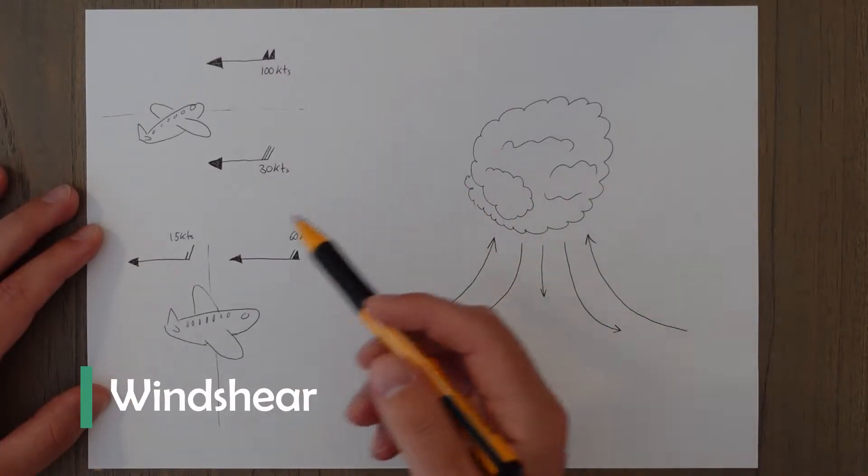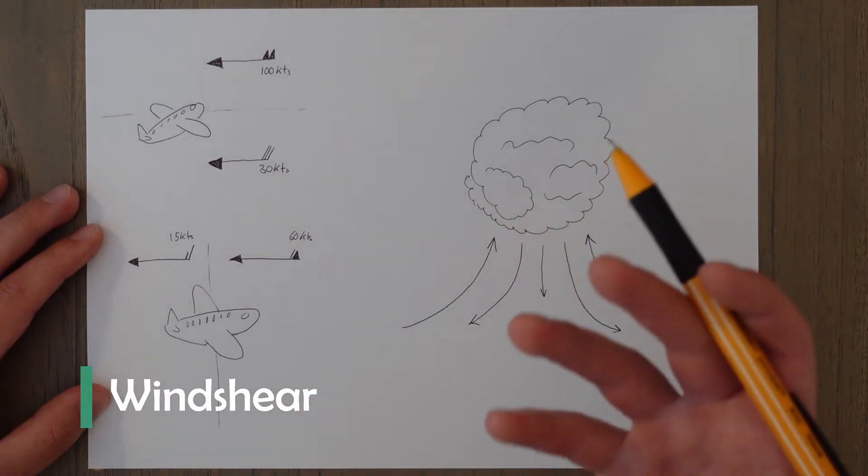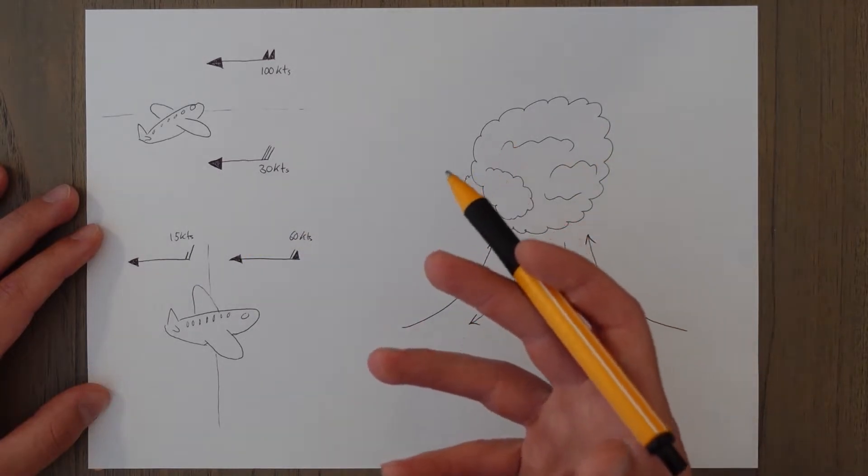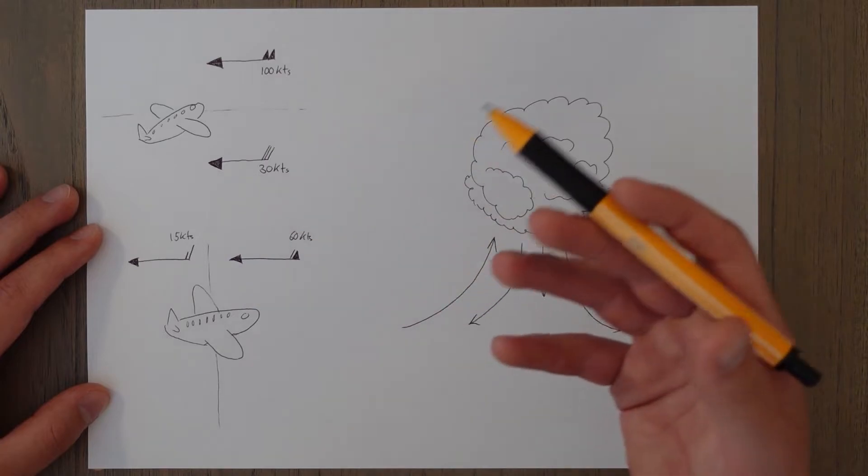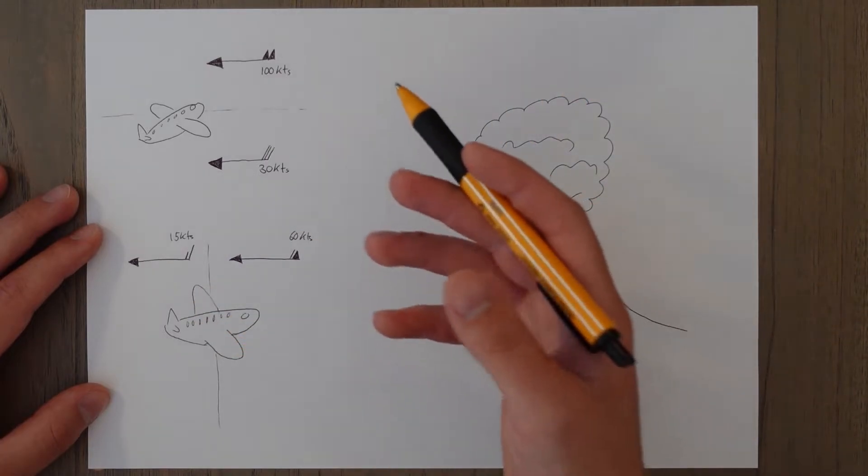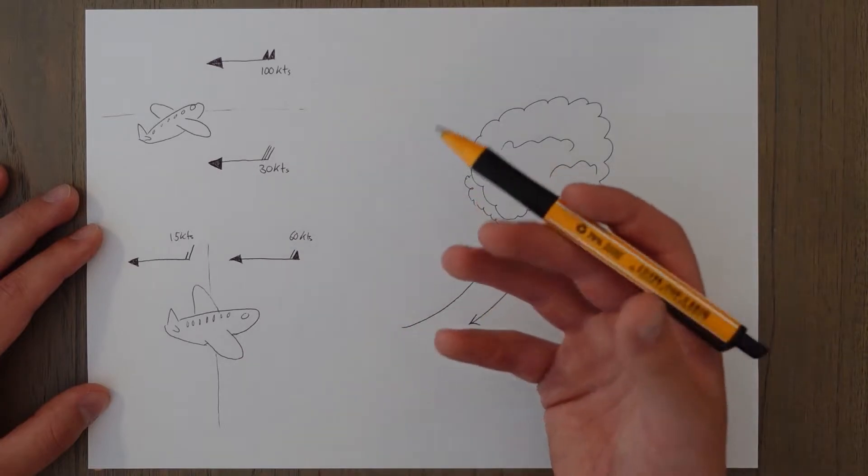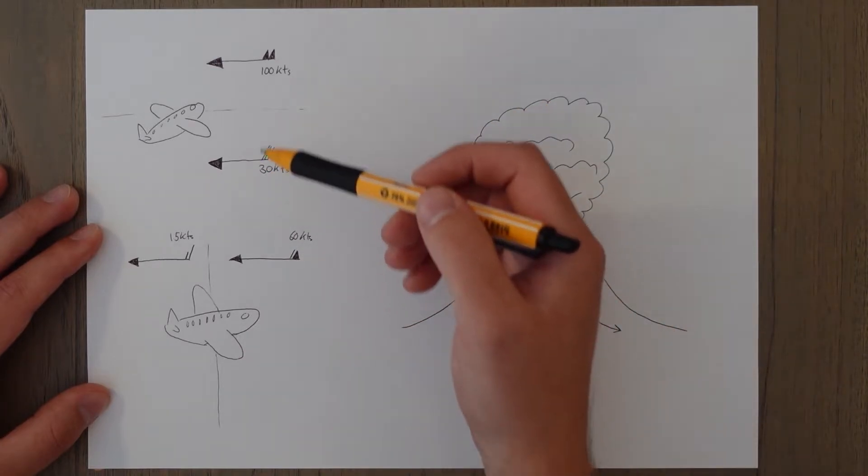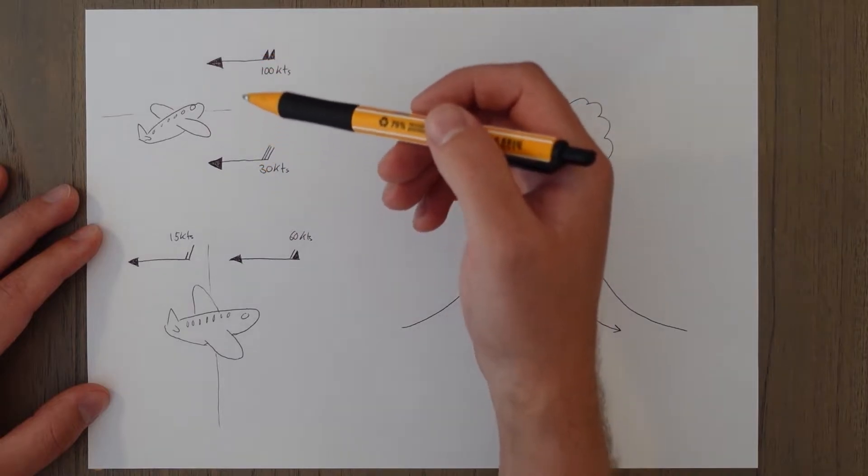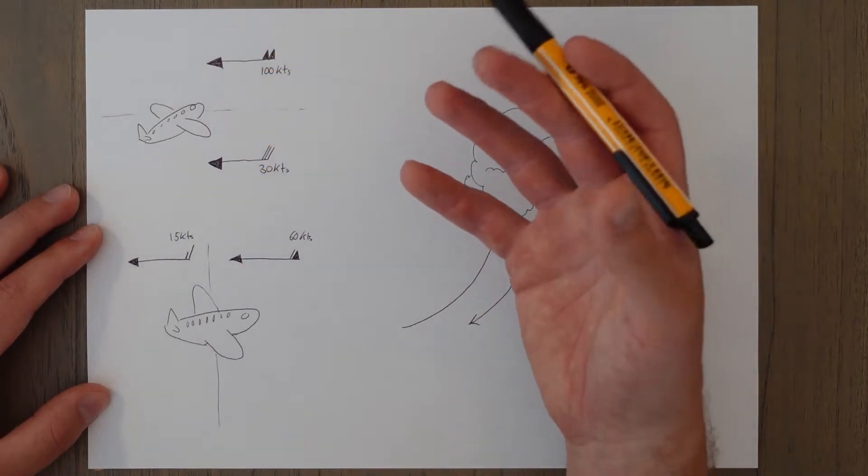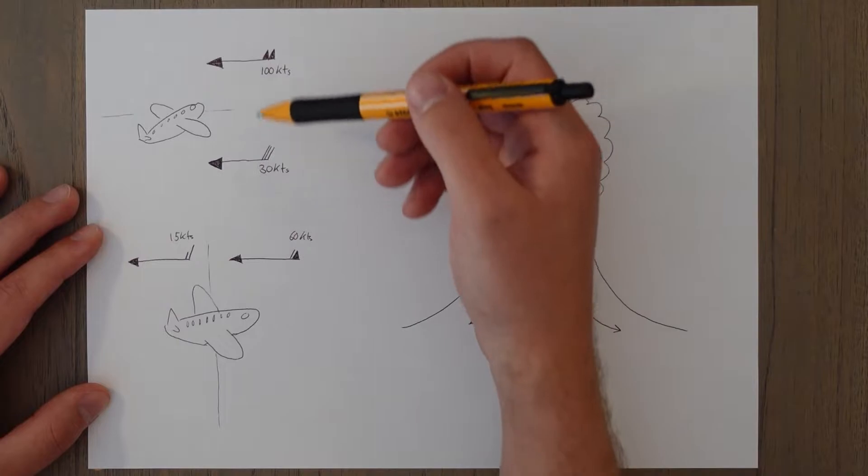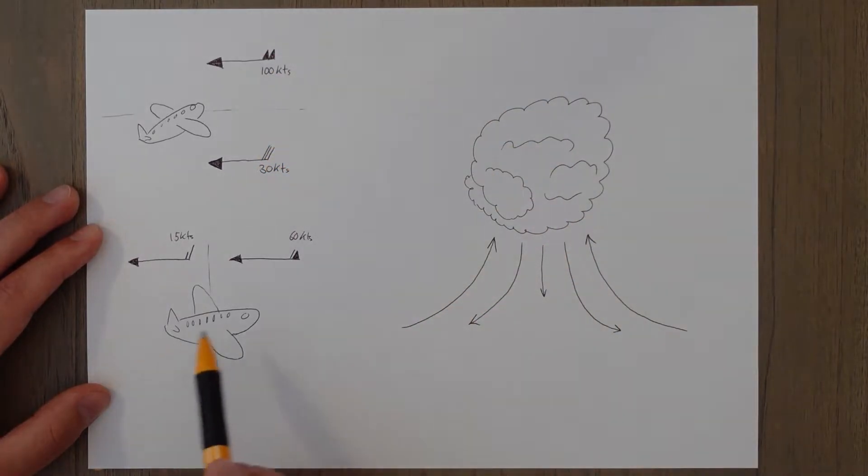A more extreme version of this change in wind direction is called wind shear. It is a change in wind direction and/or speed between two areas that will cause a disruption to the aircraft flight path that will require some sort of correction. It can be vertical, where the wind speed or wind vector changes with height, and it can also be horizontal, where the wind vector changes when we move horizontally into a new area.